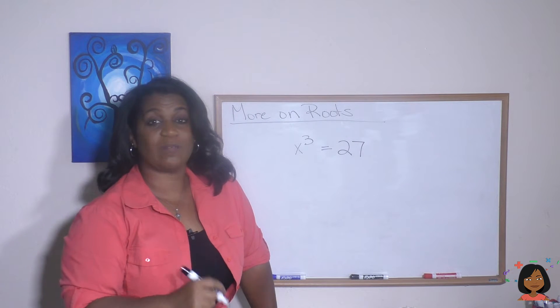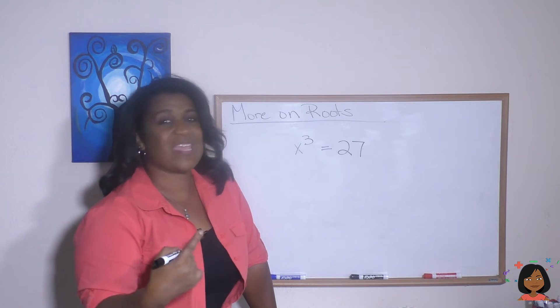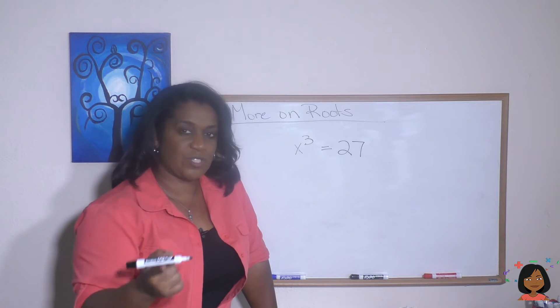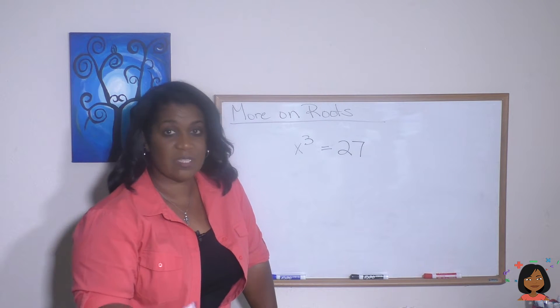So 7 and negative 7 satisfies this equation. Take a look at this one. So we have x to the third power, which we can also say x cubed equals 27. So I want you to think, what number times itself 3 times equals 27?